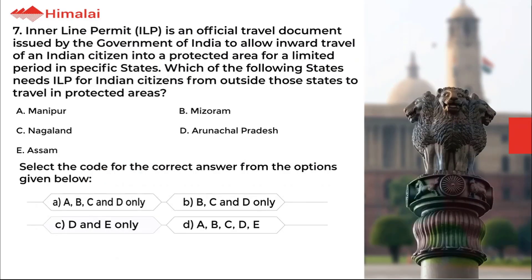Question number 7. An Inner Line Permit (ILP) is an official travel document issued by the Government of India to allow inward travel of an Indian citizen into a protected area for a limited period in specific states. Which of the following states needs ILP for Indian citizens from outside those states? a. Manipur, b. Mizoram, c. Nagaland, d. Arunachal Pradesh, e. Assam.